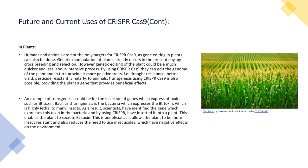Bacillus thuringiensis is the bacterium which expresses Bt toxin — a highly lethal toxin to many insects. Scientists have identified the gene which expresses this toxin and, using CRISPR-Cas9, have inserted it into the plant, enabling the plant to secrete Bt toxin. This is beneficial as it allows the plant to be more insect-resistant and reduces the need for insecticides, which have negative effects on the environment.